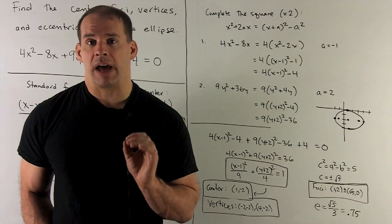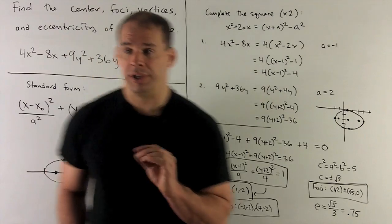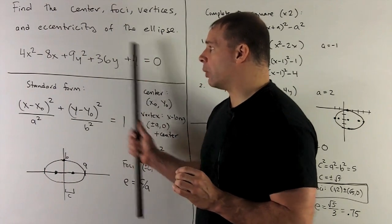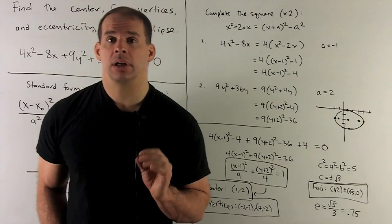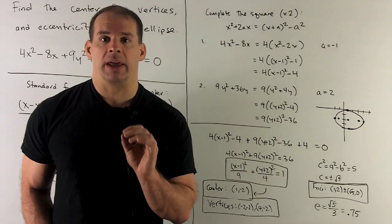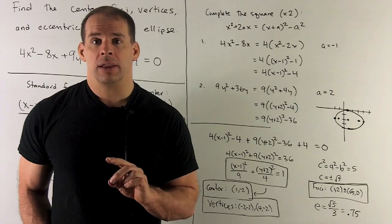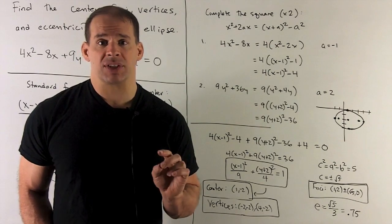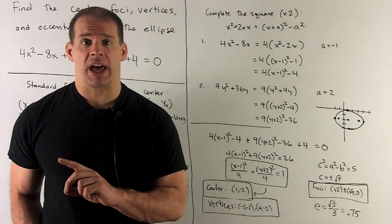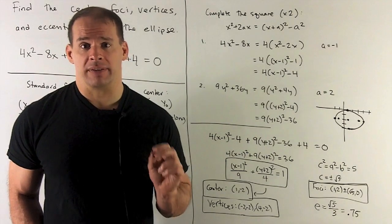Now, to find our items, we're going to need to complete the square twice. We'll need to do it once for our x terms and once for our y terms. How do we complete the square? Take (x + a)² = x² + 2ax + a². Move your a² to the other side. Then, you just need to identify the 2a that's in front of x.